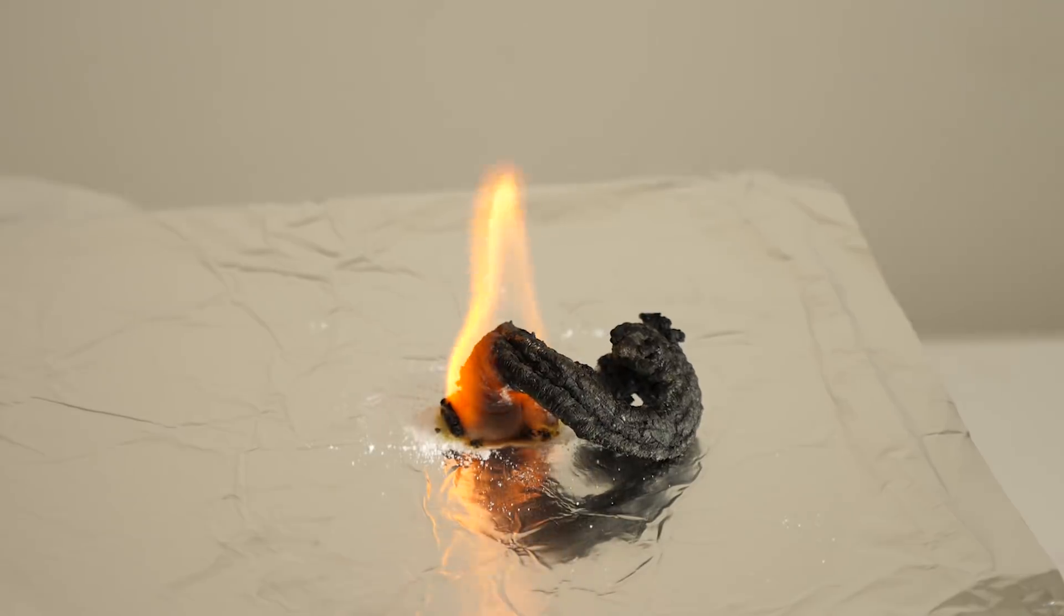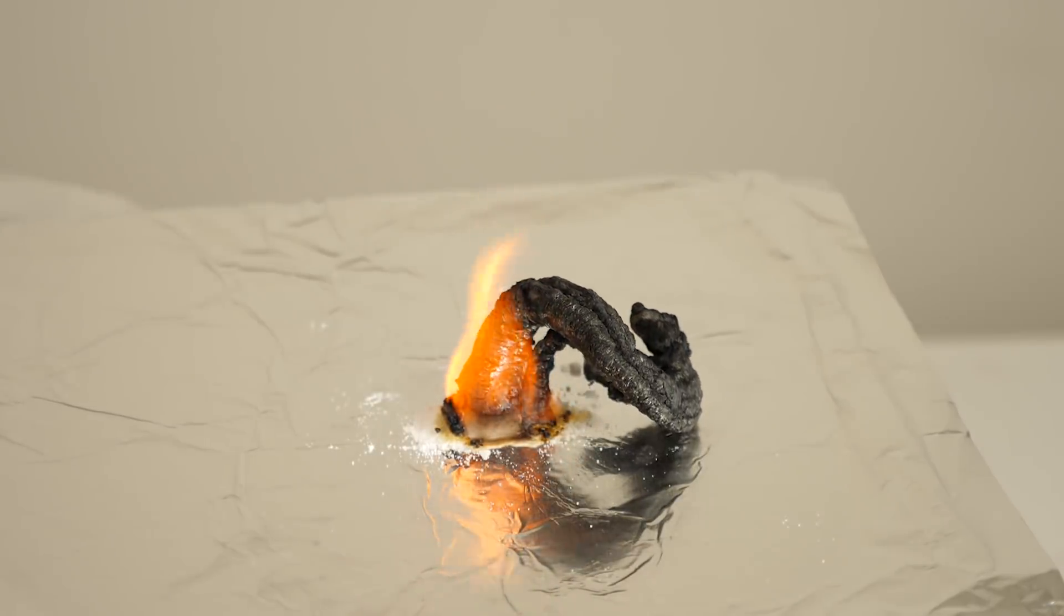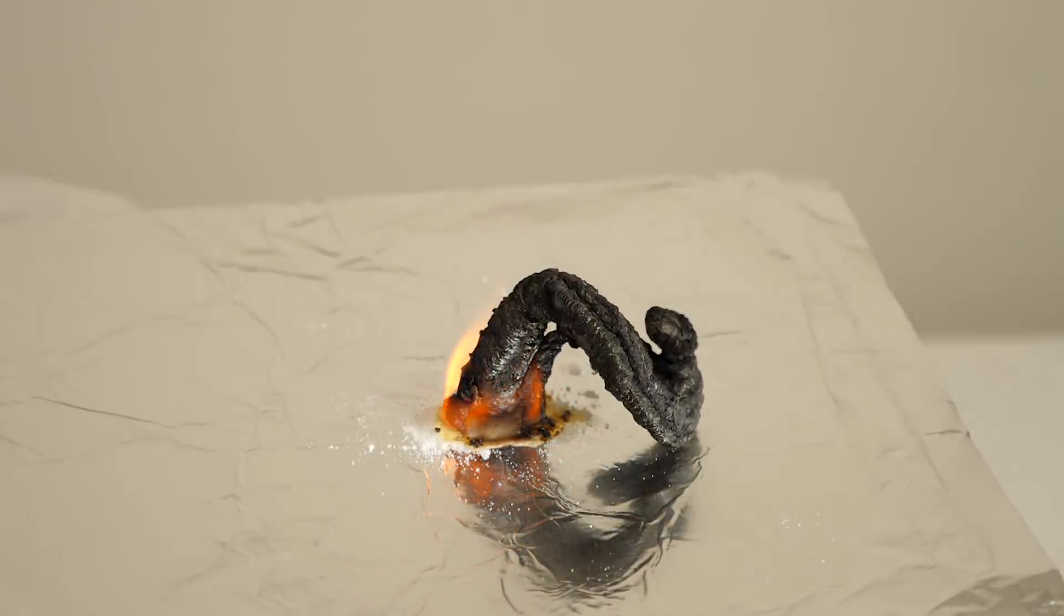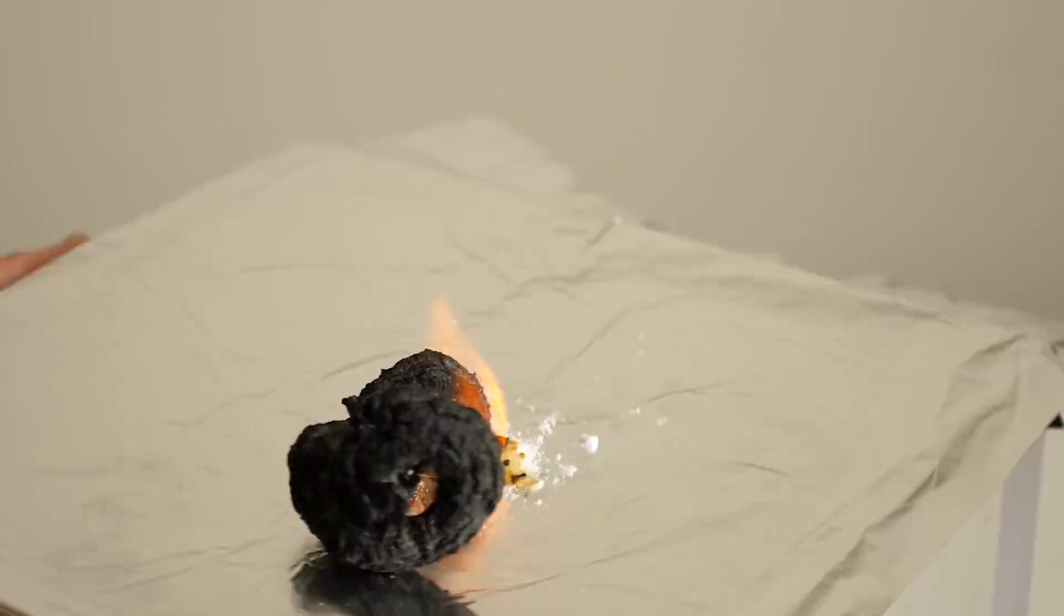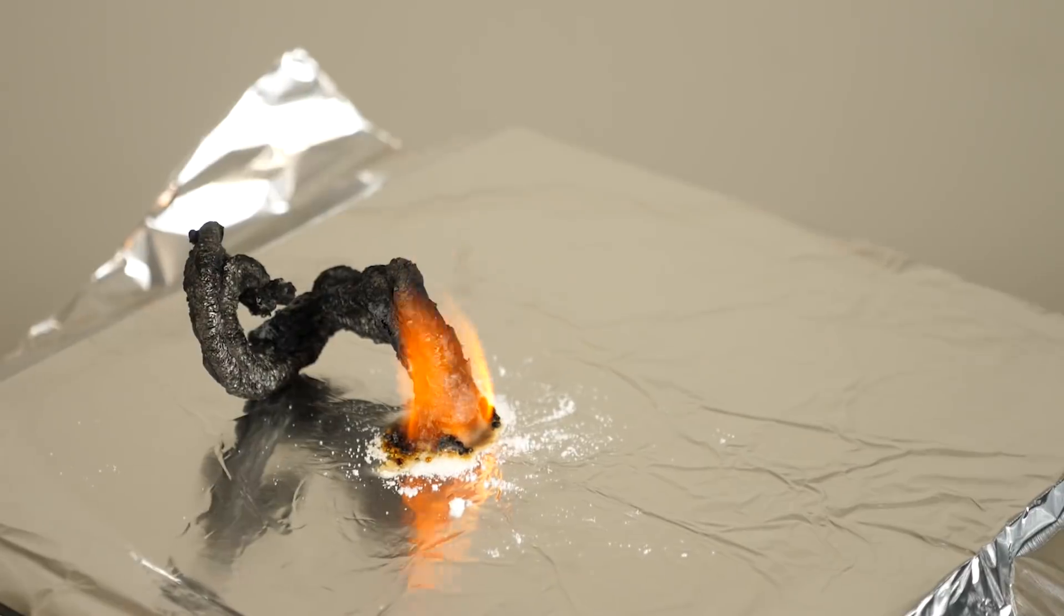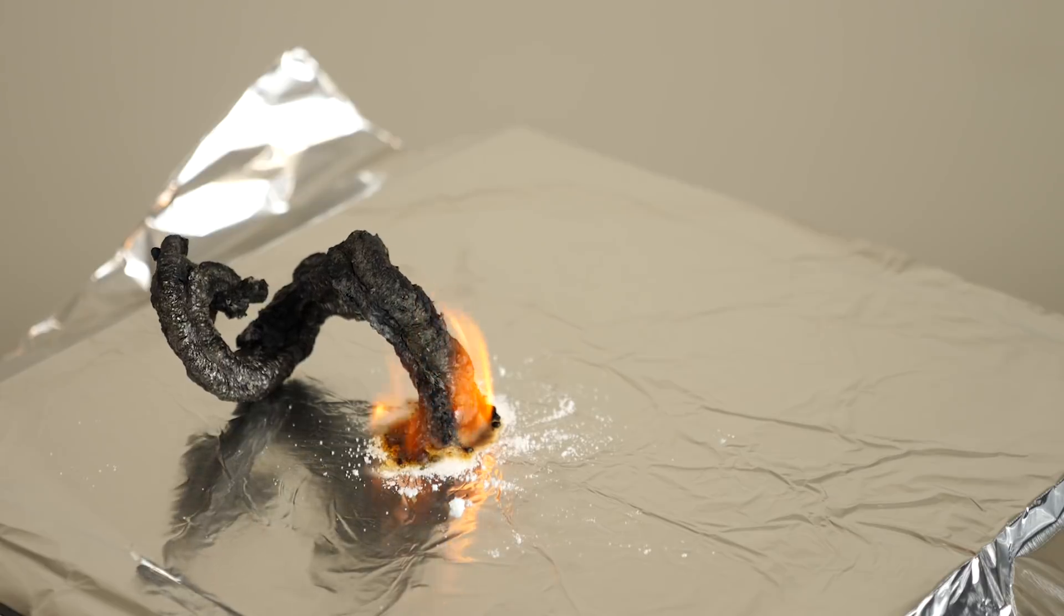And so the carbon is getting mixed with the liquid sugar and the carbon dioxide is expanding. And so that's pushing up all the carbon. And then the liquid sugar hardens and it's creating this solid black snake that comes out of it.